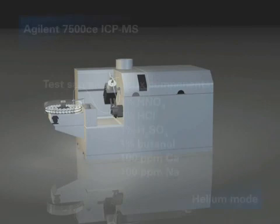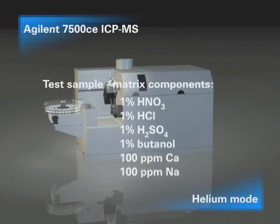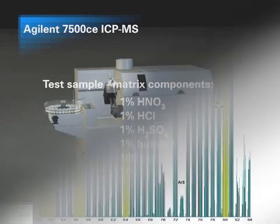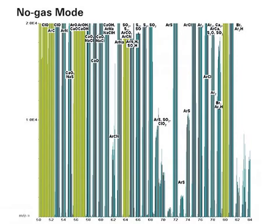To illustrate the interference removal power of the helium mode, a very challenging sample matrix containing these components was analyzed. Spectra were obtained for the mid-mass range where most polyatomic interferences occur. This spectrum shows the matrix interferences that occur in normal ICP-MS — acquired in normal mode, that is, with no gas added to the cell. Almost every analyte in this mass range suffers severe polyatomic overlaps, making quantification impossible at trace levels.